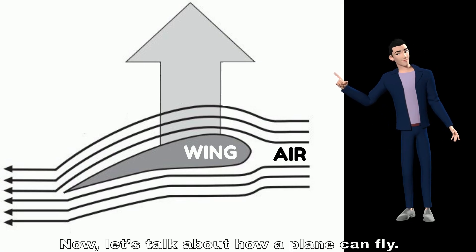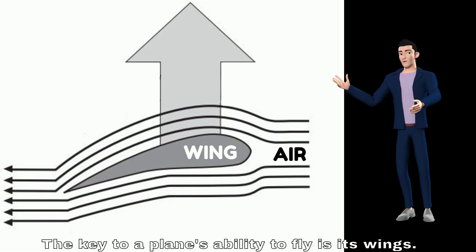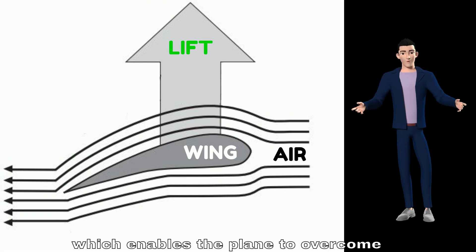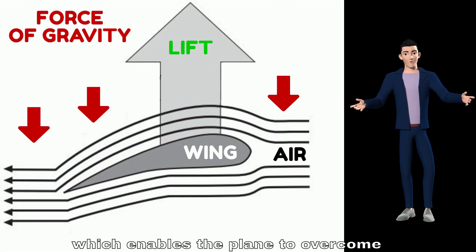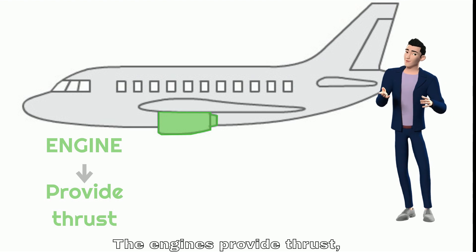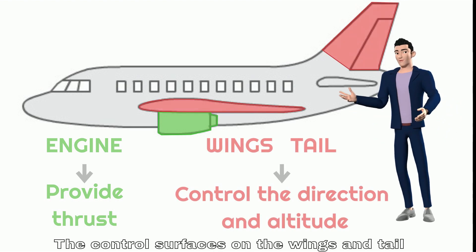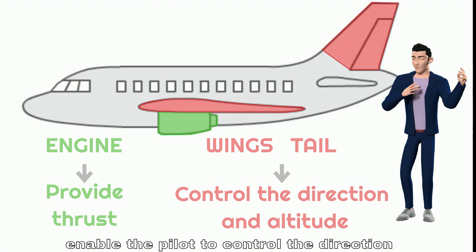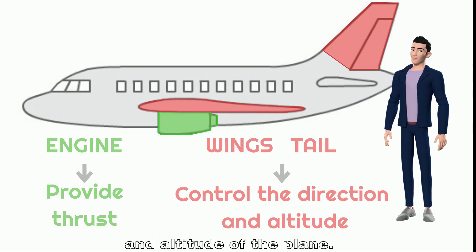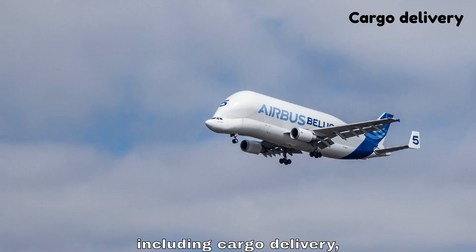Now let's talk about how a plane can fly. The key to a plane's ability to fly is its wings. The shape and design of the wings create lift, which enables the plane to overcome the force of gravity and stay in the air. The engines provide thrust, which propels the plane forward. The control surfaces on the wings and tail enable the pilot to control the direction and altitude of the plane.